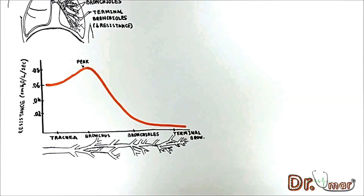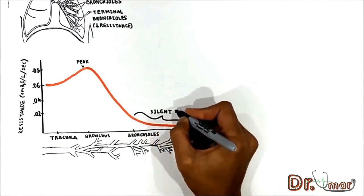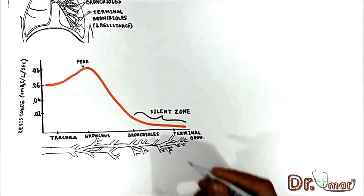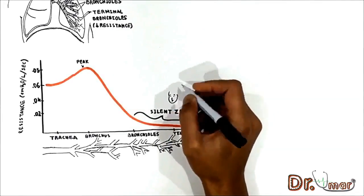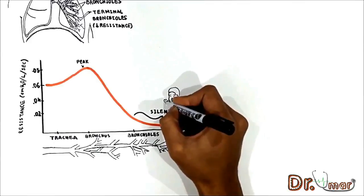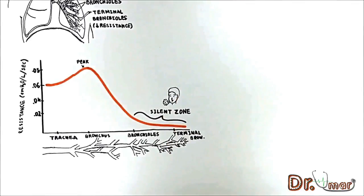Because of this point, some clinical books refer to the bronchioles as the silent zone. What they mean is if a patient has early stages of peripheral airway disease, they do not feel any dyspnea. They breathe normally.